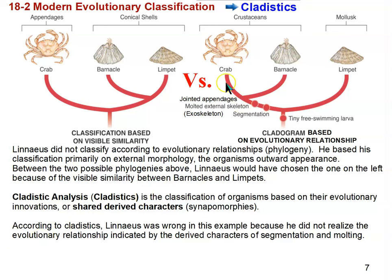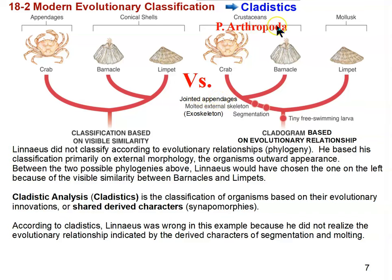Crabs and barnacles are together in the phylum Arthropoda — and Arthropoda literally translates to jointed foot or jointed appendage. Mollusks are a separate phylum, phylum Mollusca. So two separate phyla within the kingdom Animalia.